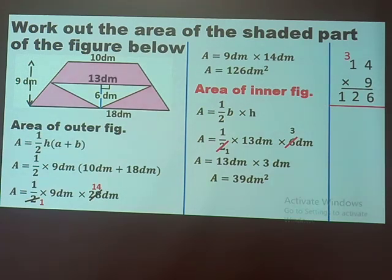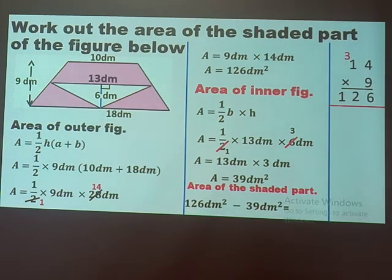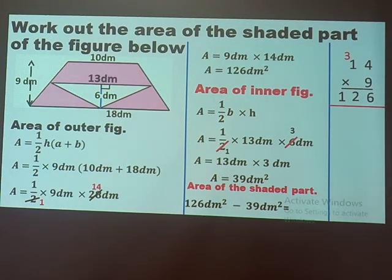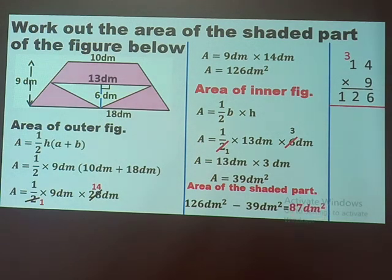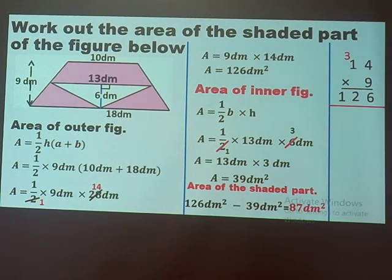13 decimeters multiplied by 3 decimeters gives 39 square decimeters — that is the area of the inner triangle. The area of the shaded part equals the area of the outer trapezium (126 square decimeters) take away the area of the inner figure (39 square decimeters). The final answer is 87 square decimeters, and that marks the end of our lesson today.